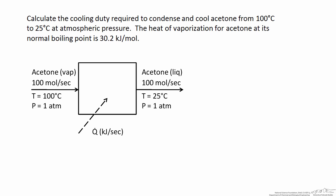In this screencast we're going to set up and solve an energy balance on a condenser, and we will use sensible and latent heat to help us with the solution. We want to calculate the cooling duty required to condense and cool acetone from 100°C to 25°C at atmospheric pressure. We know that the heat of vaporization for acetone at its normal boiling point is 30.2 kJ/mol, and by definition the normal boiling point is the boiling point at atmospheric pressure.